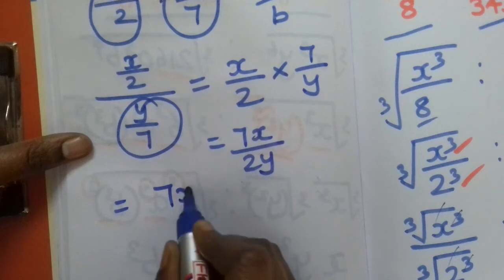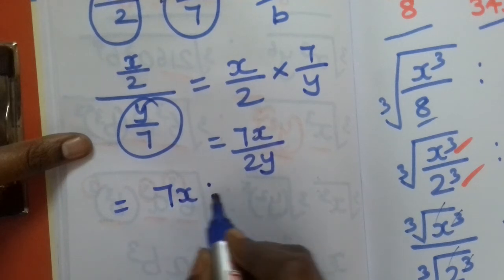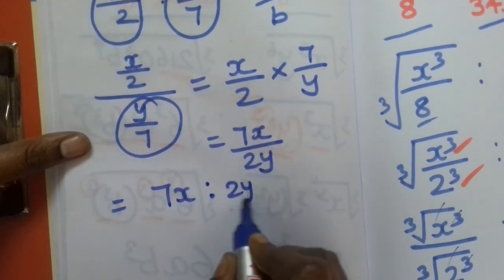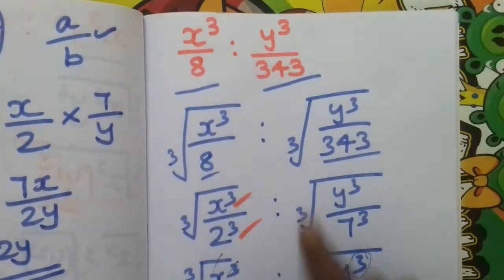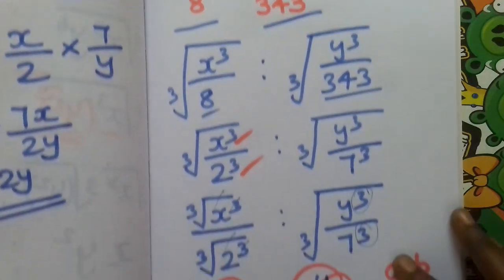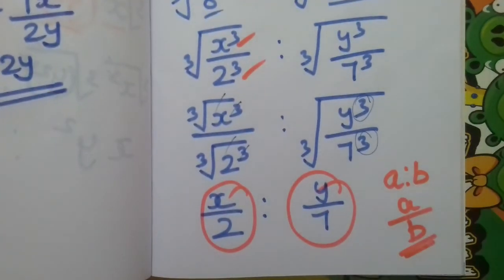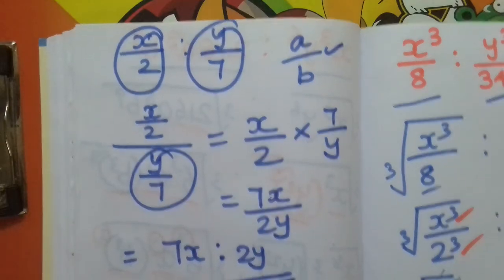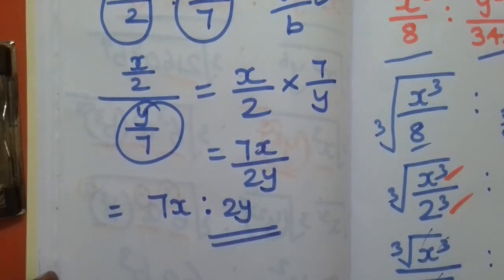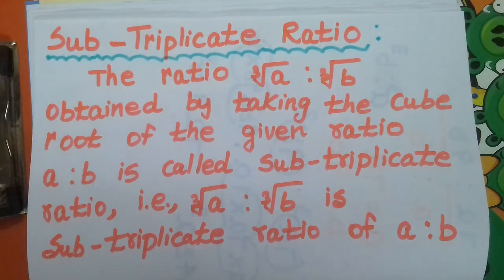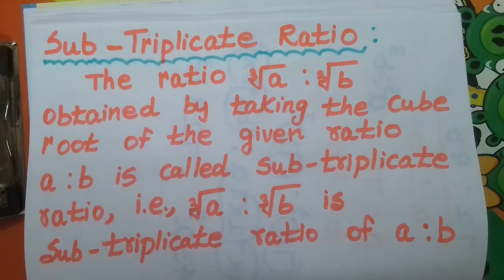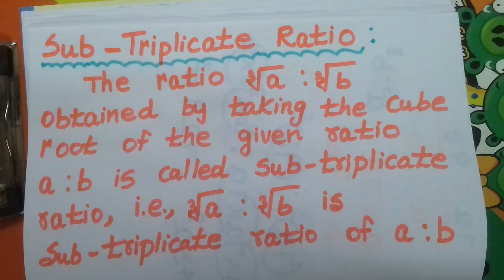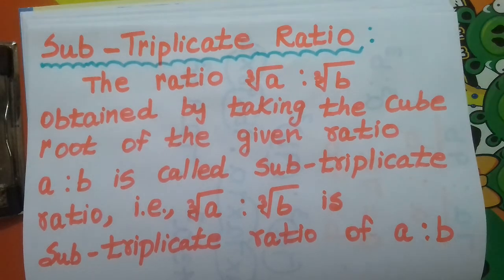So the answer is 7x is to 2y. So in that question, the steps are complete. Sub-triplicate ratio means taking the cube root of both the antecedent and the consequent. Thank you so much for watching this video.